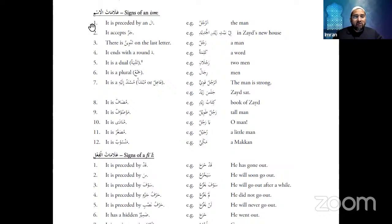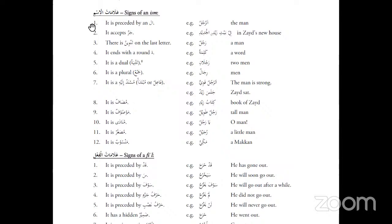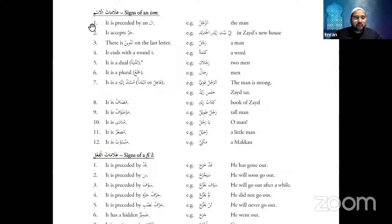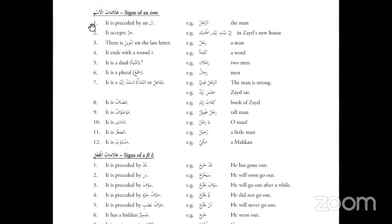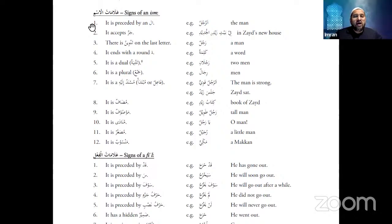The first sign of an ism: it is preceded by alif-lam — meaning 'al' — for example 'al-rajulu'. Al-lam means 'the'. Al-rajulu, al-baytu, al-kitabu, al-qalamu. Alif-lam is a definite article, so when a definite article comes it makes the noun into a definite noun, also called a proper noun. It means you're referring to a particular person — 'the man' — whereas without alif-lam, 'rajulun' could be any man.